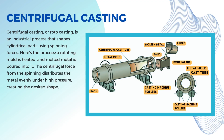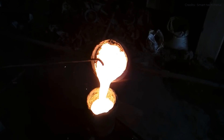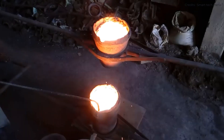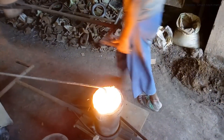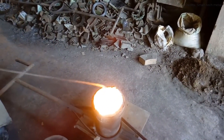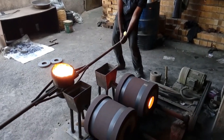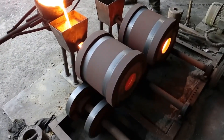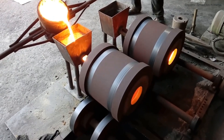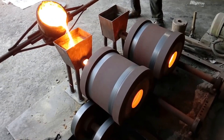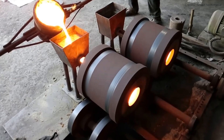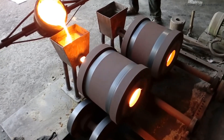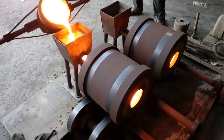Centrifugal casting, also known as rotocasting, is a way to make cylindrical parts in industry using spinning forces. They heat up a spinning mold, then pour melted metal into it. The spinning makes the metal spread out evenly under high pressure. There are three types: true centrifugal casting, which lets the metal stick to the sides as it spins; semi-centrifugal casting, which fills the mold using a sprue; and vertical centrifugal casting, which works like true centrifugal but is done in an up-and-down orientation.